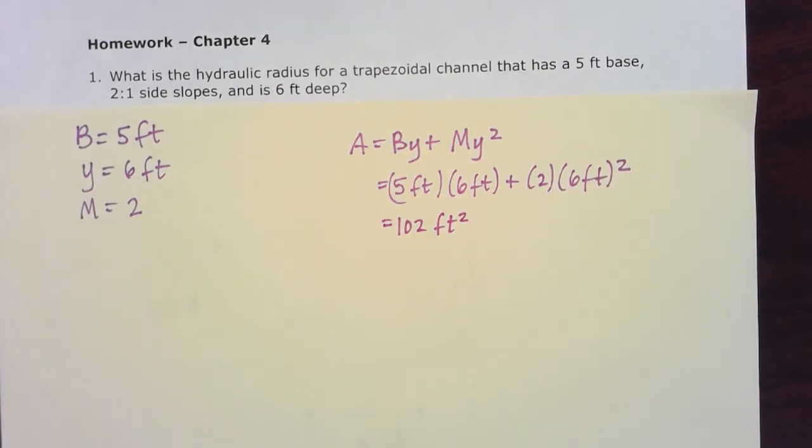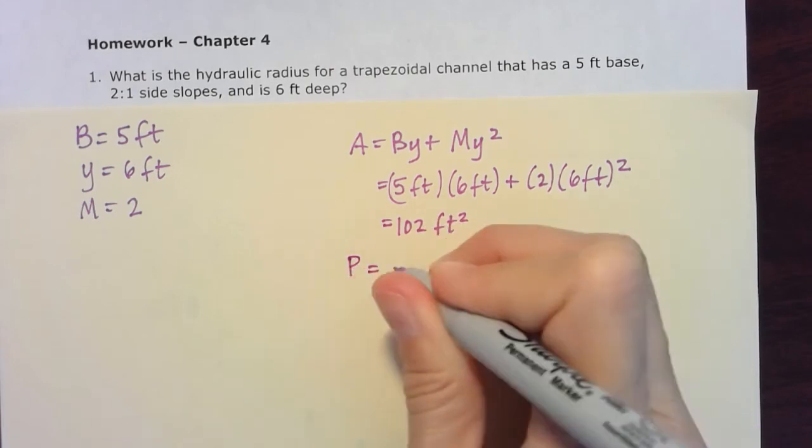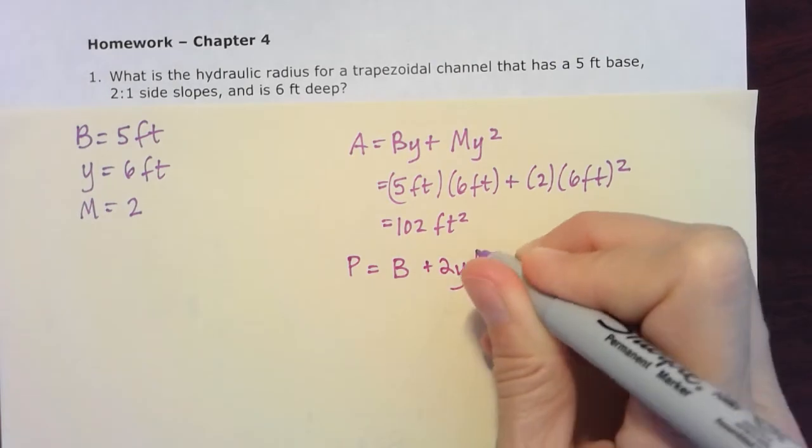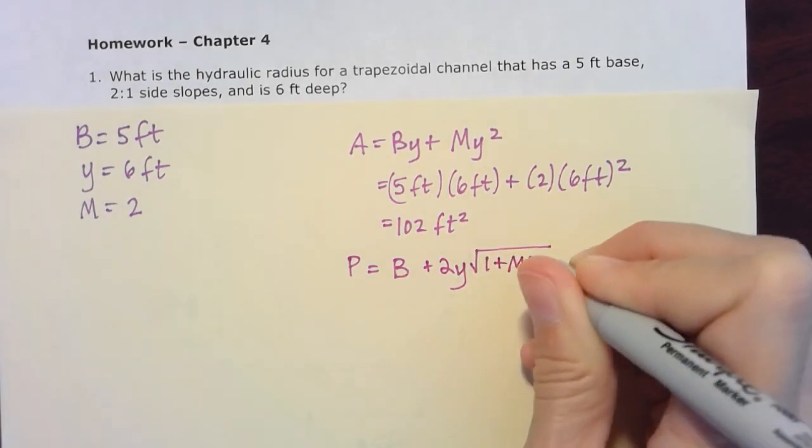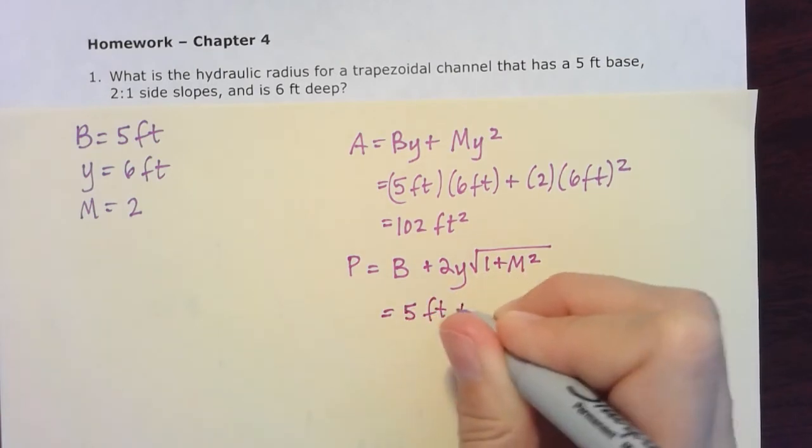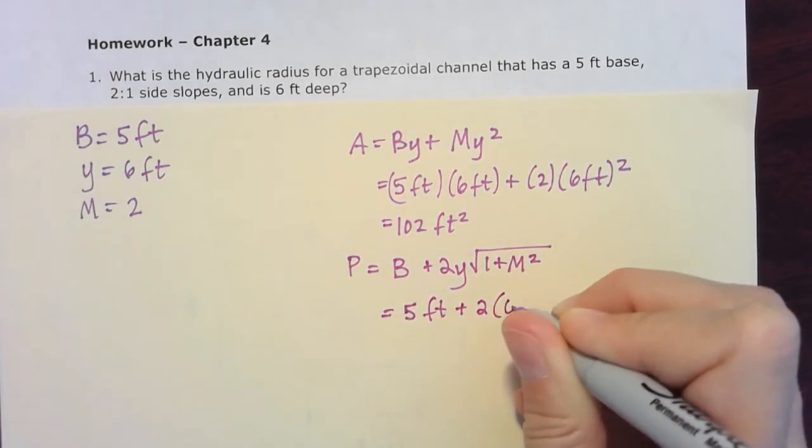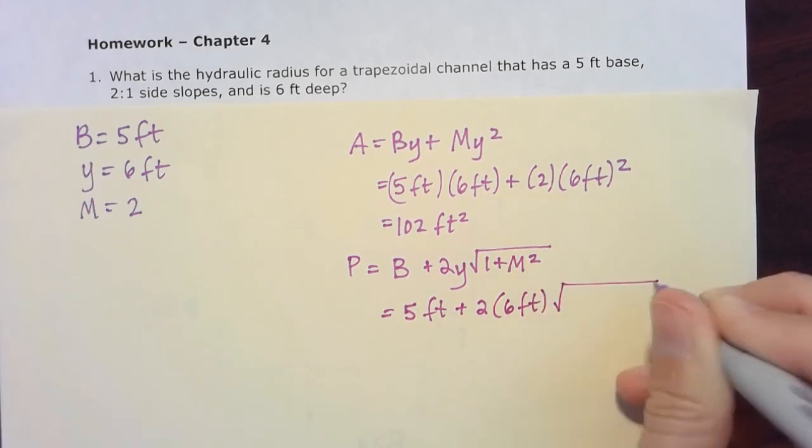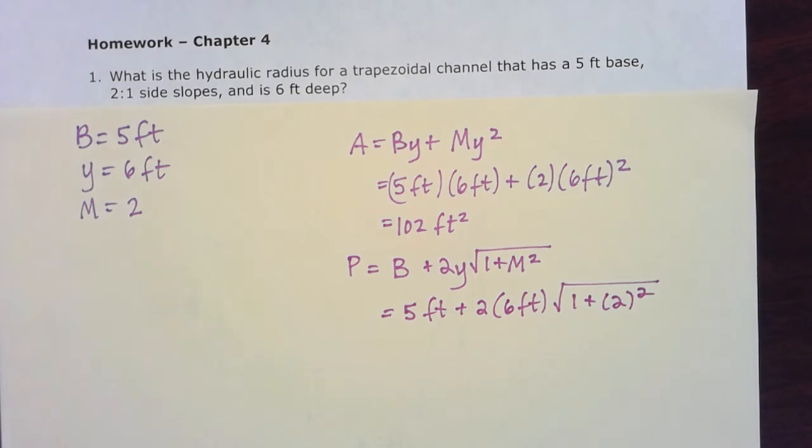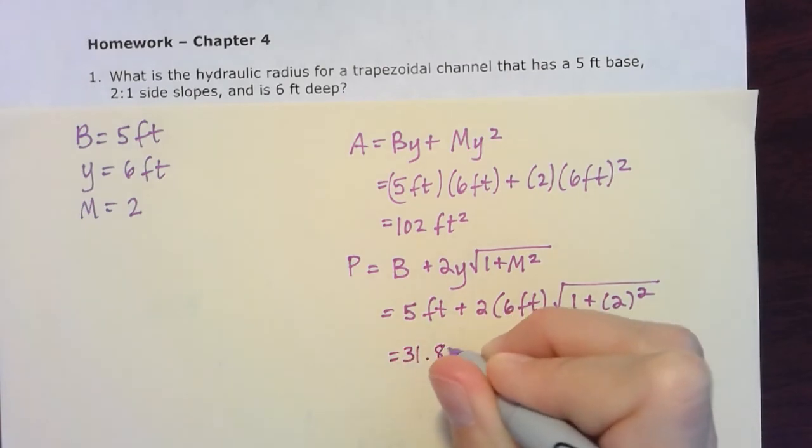Let's go ahead and follow the formula for wetted perimeter. That's gonna be the base of that trapezoidal channel plus two times Y times the square root of one plus M squared. So in this case, I define B as five feet plus two times that six foot depth times the square root of one plus two, and then we're gonna square that M. So I do the math out for that, and to two decimal places I get 31.83 feet.